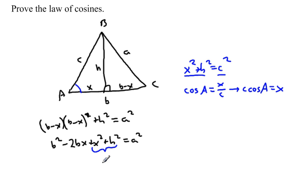So we're going to put c squared in place of x squared plus h squared. Another substitution we can make, x right here, we know is equal to c times the cosine of A.